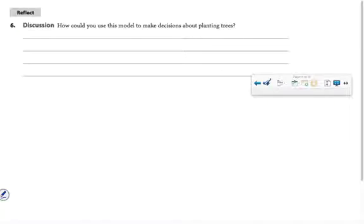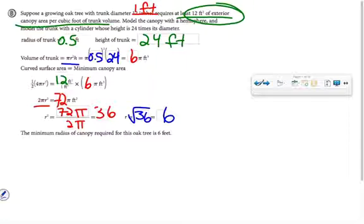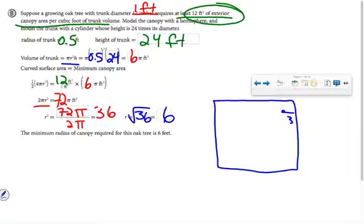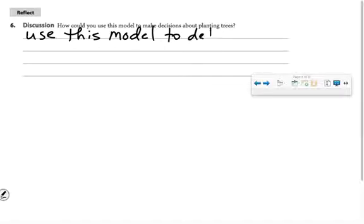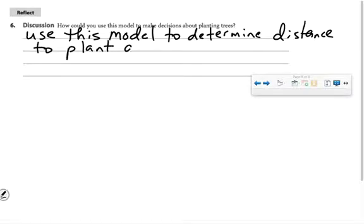Well, how would I use this to make decisions about planting trees? Well, for instance, in this problem, if I need a radius of 6 feet, let's say, and this is my yard, I'm not going to plant this tree at 3 feet away from my fence. I wouldn't be giving my tree enough room to be healthy. Okay, so how can I put that in written work? How could you use this model to make decisions about planting trees? Use this model to determine the distance to plant a tree away from, let's say, a fence. The real world.